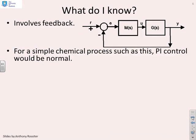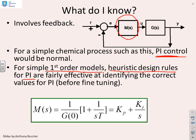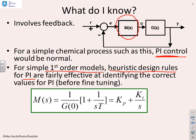Now what else do I know? We want to design a feedback law, for example M(s), in order to control the temperature. For a simple chemical process such as this, PI control would be relatively normal. Also we know that if you have a simple first order model or system, then the heuristic design rules for PI are fairly effective at identifying the correct values without any fine tuning.